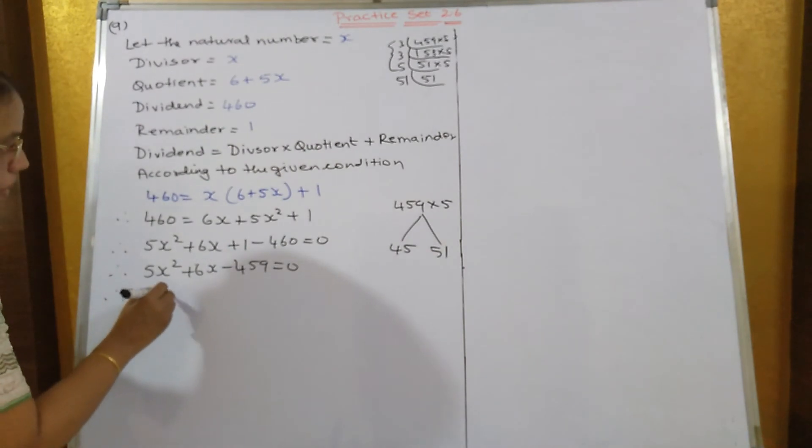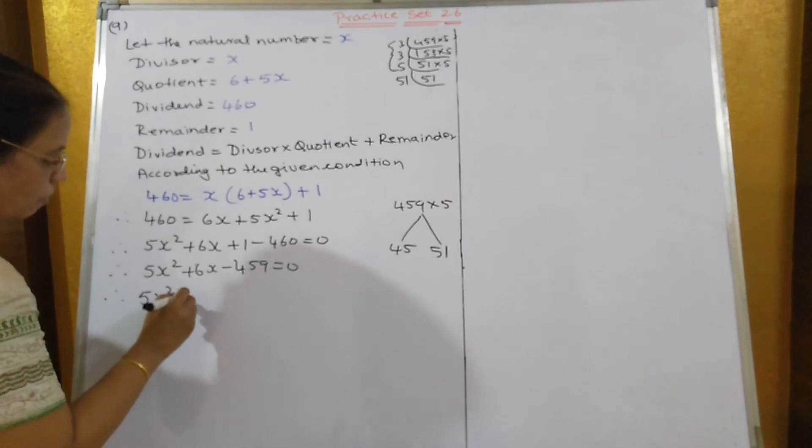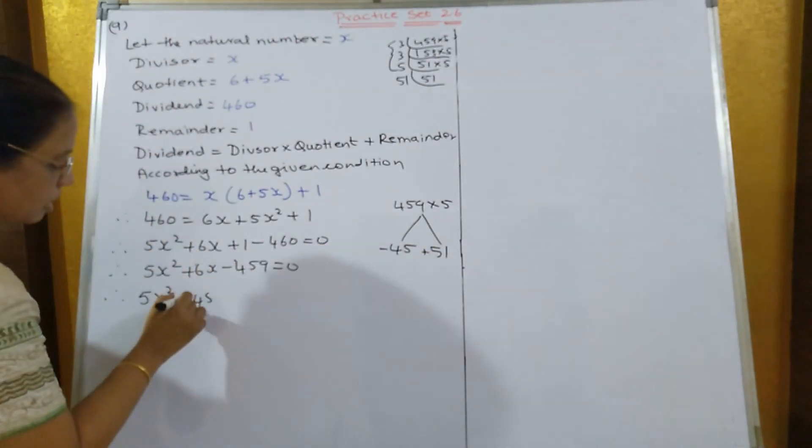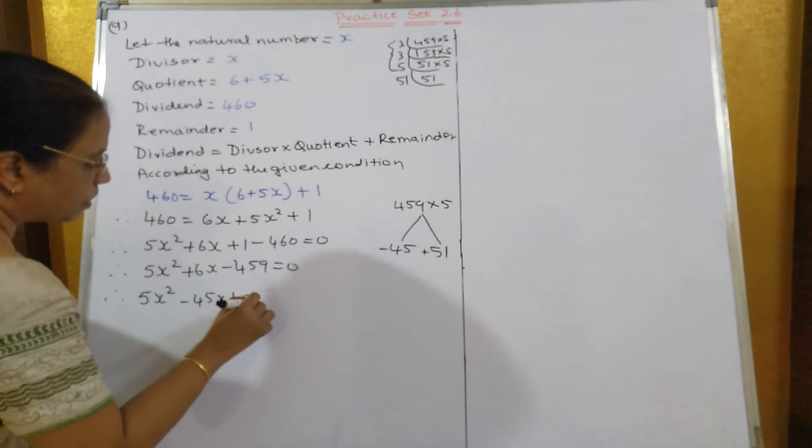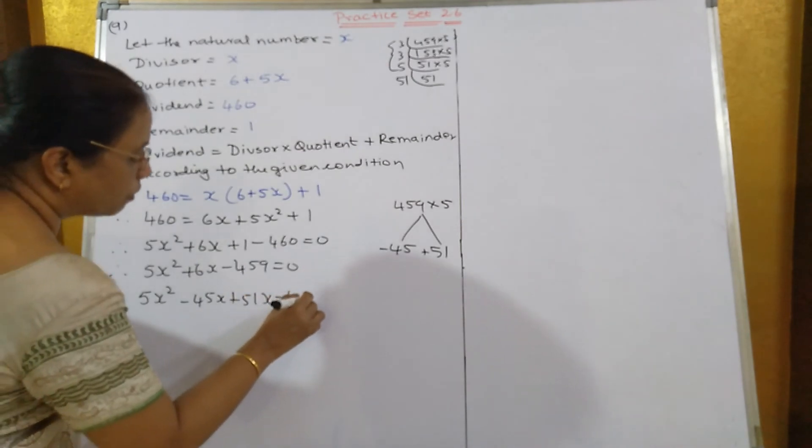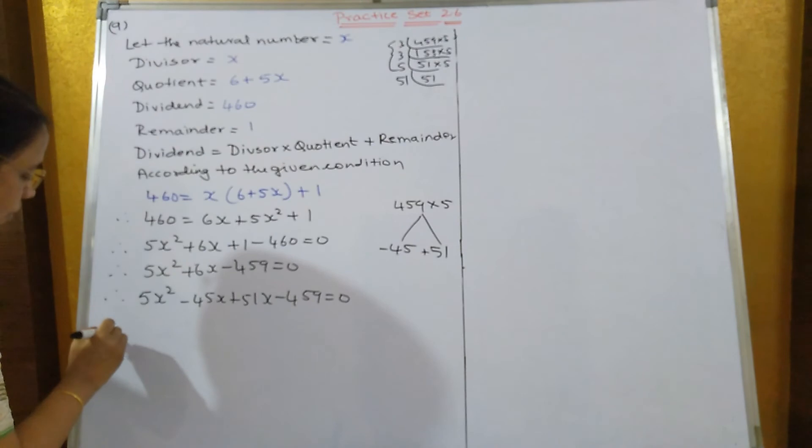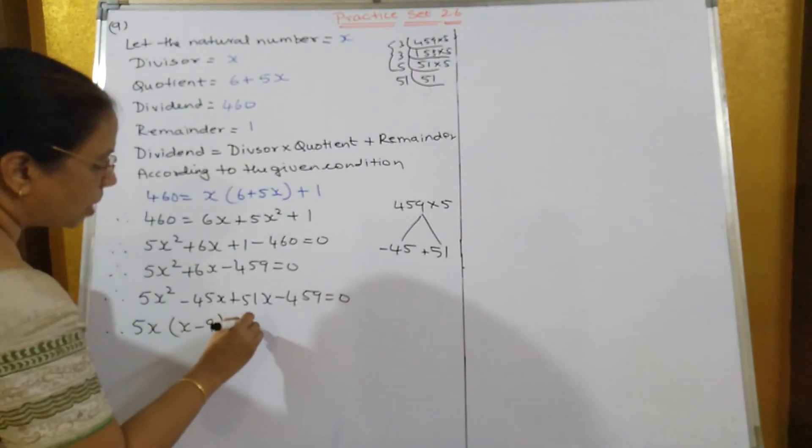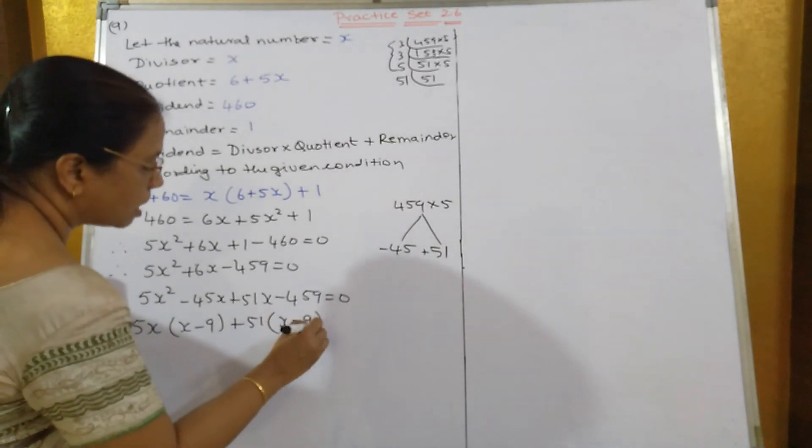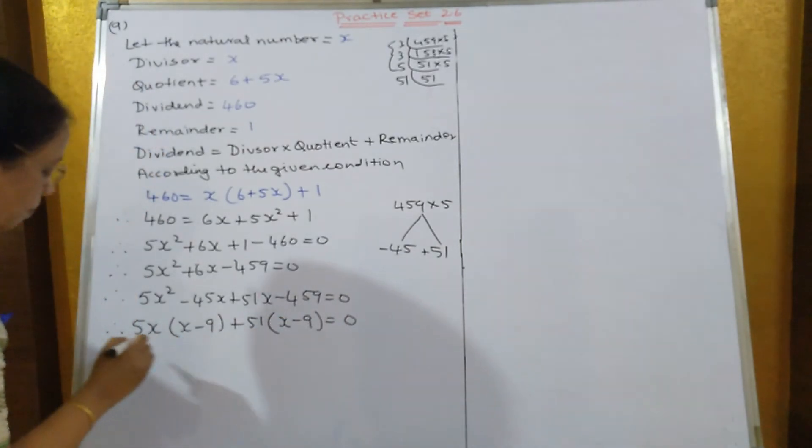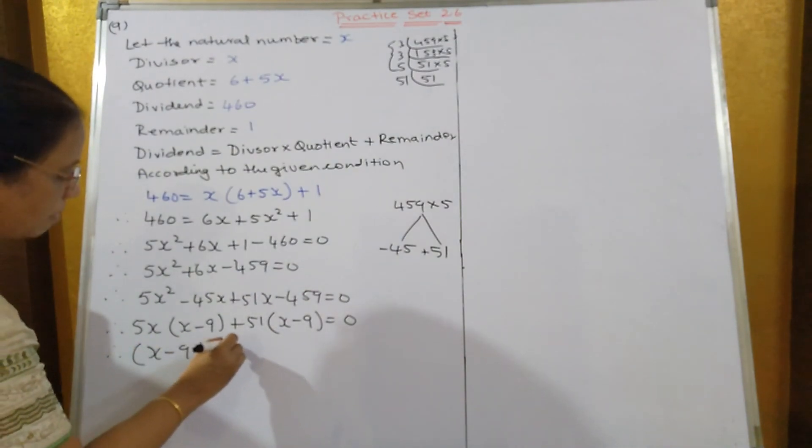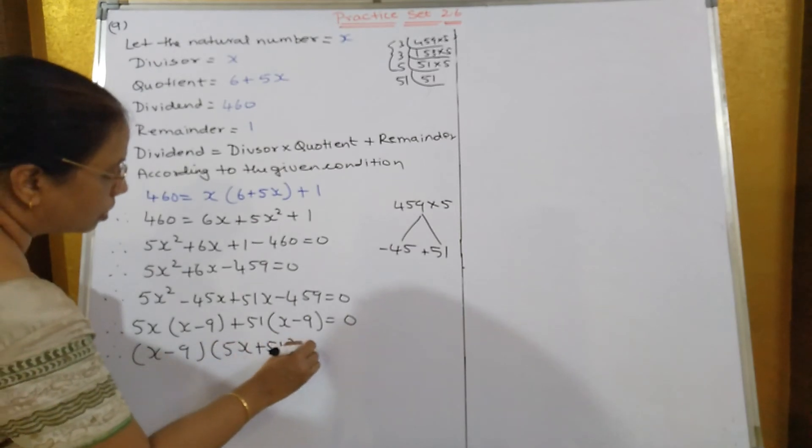5x square plus 45x, not plus, minus. Bigger number will be plus and smaller number will be minus. So minus 45x plus 51x minus 459 is equal to 0. Therefore, 5x is common, x minus 9, plus 51 is common, x minus 9 is equal to 0. Therefore, x minus 9 and the other one is 5x plus 51 is equal to 0.